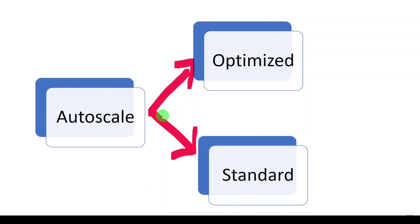There are two different types of auto scaling: optimized and standard. In Databricks, we also have two different cluster types: automated or job cluster, and all-purpose or interactive cluster. For job or automated clusters, optimized auto scaling is always applied. For interactive or all-purpose clusters, the auto scaling method depends on the environment. If you choose the standard pricing tier when creating Databricks, standard auto scaling applies. If you choose the premium pricing tier, optimized auto scaling applies.